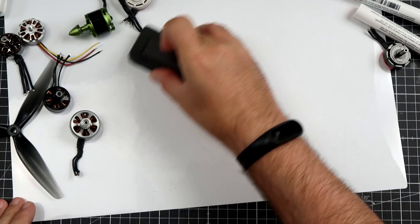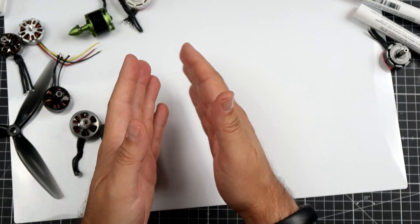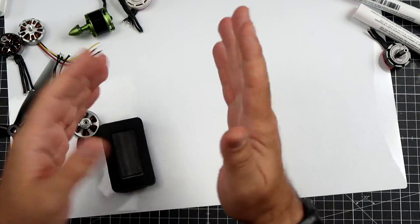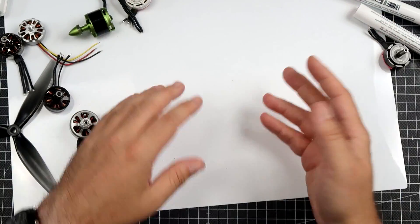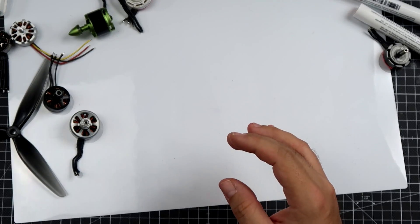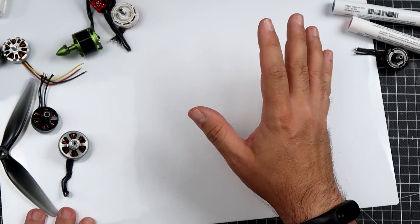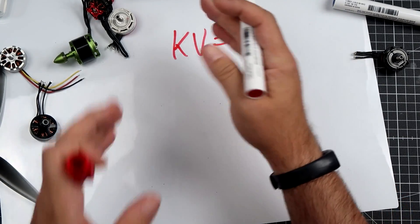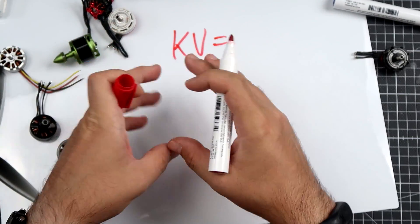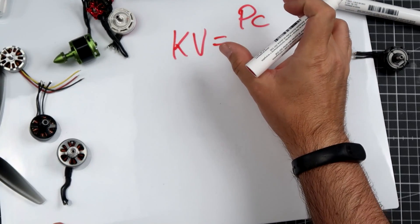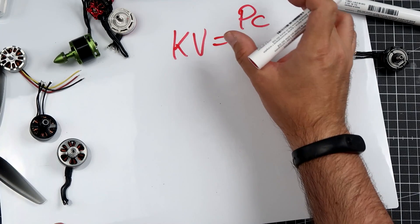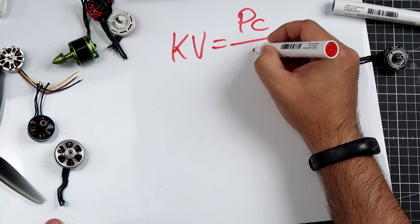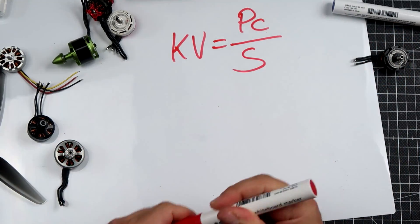The second aspect of choosing the correct motor is the KV. Everybody is familiar with KV values for different setups. I spent some time with the math and came up with a nice equation: the required KV equals PC, which we'll call the propeller coefficient, divided by the S number of cells.